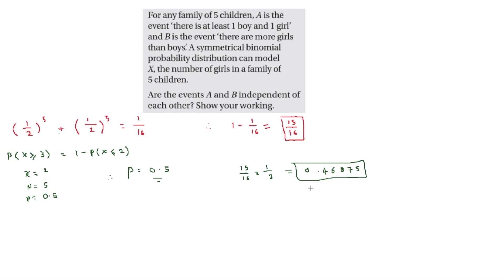To find P(A ∩ B) directly, we identify which values of x satisfy both events. If x = 3, there are more girls than boys and at least one boy and one girl — so it satisfies both. If x = 4, same reasoning applies. If x = 5, there are no boys, so A fails. If x = 1 or 2, there are more boys than girls, so B fails. Therefore P(A ∩ B) = P(X = 3) + P(X = 4).